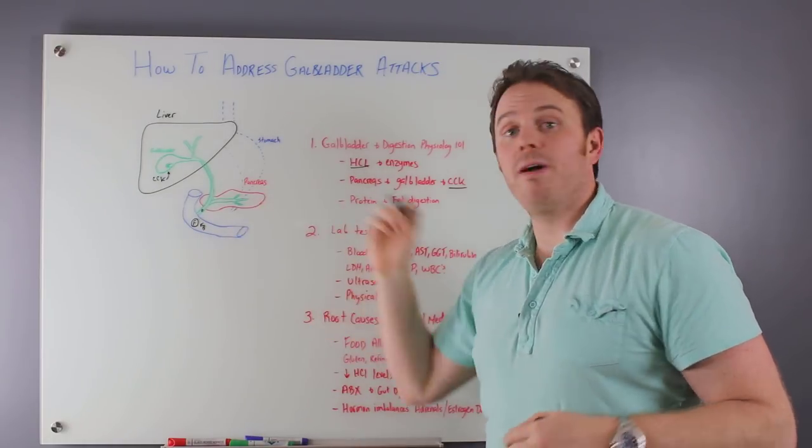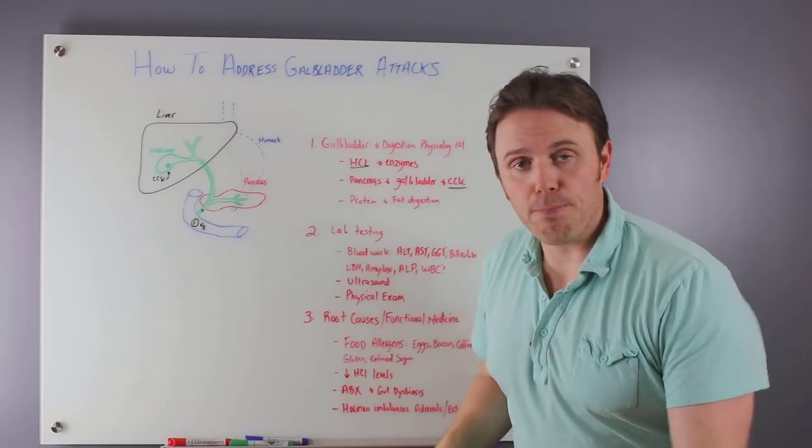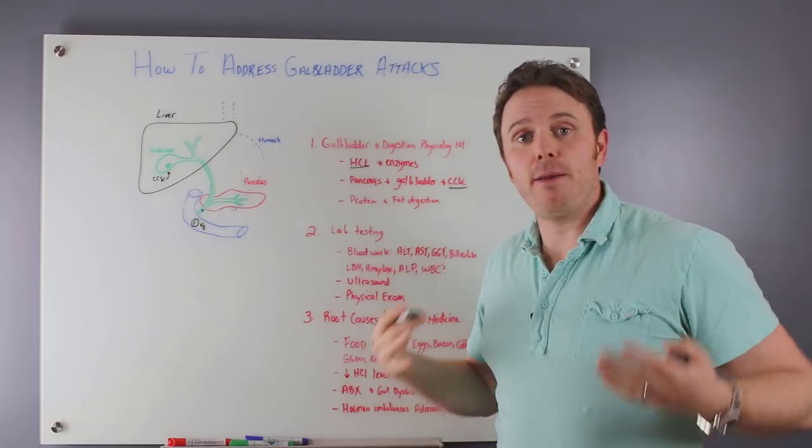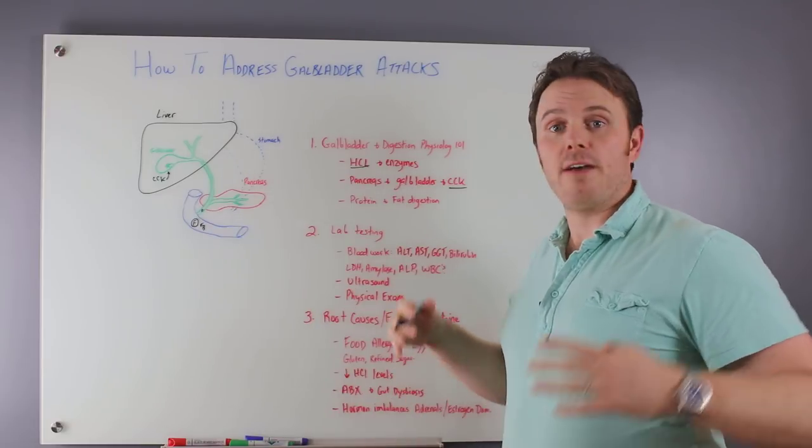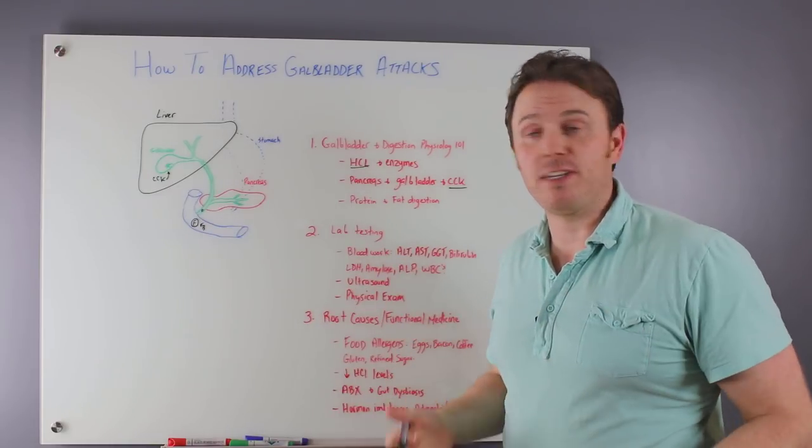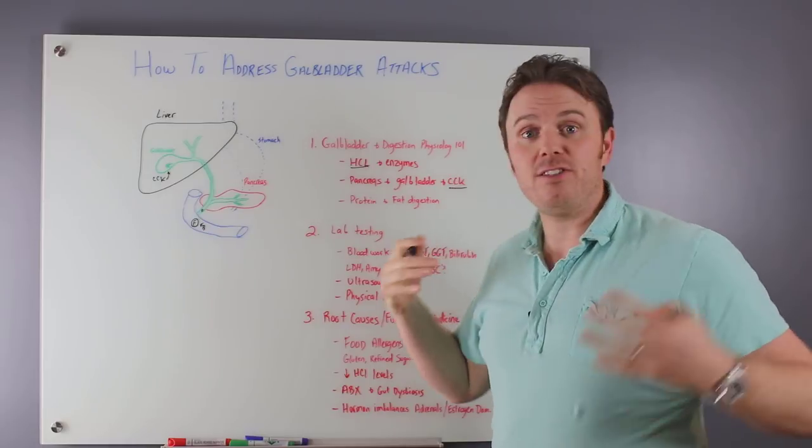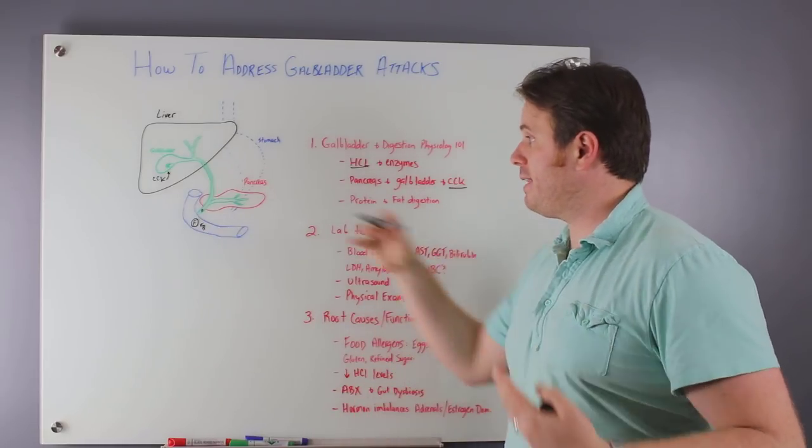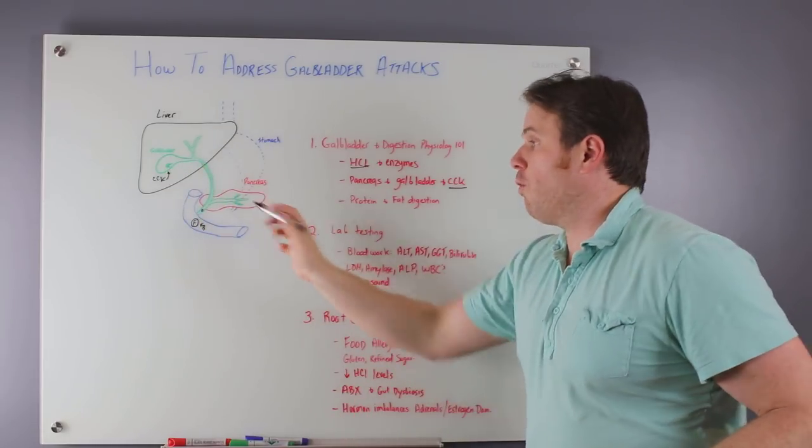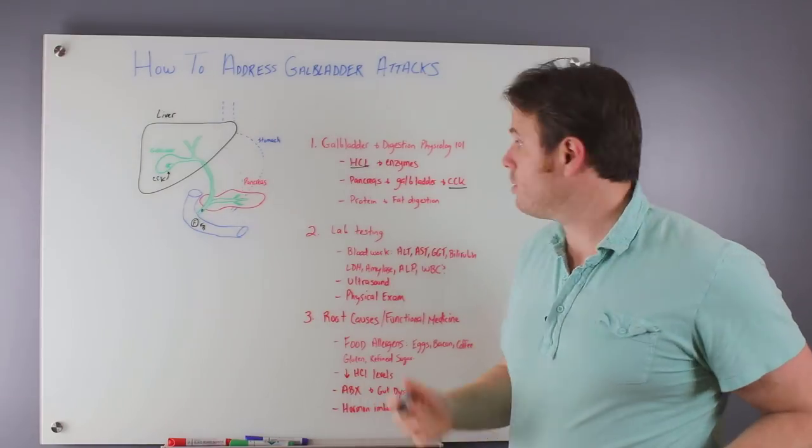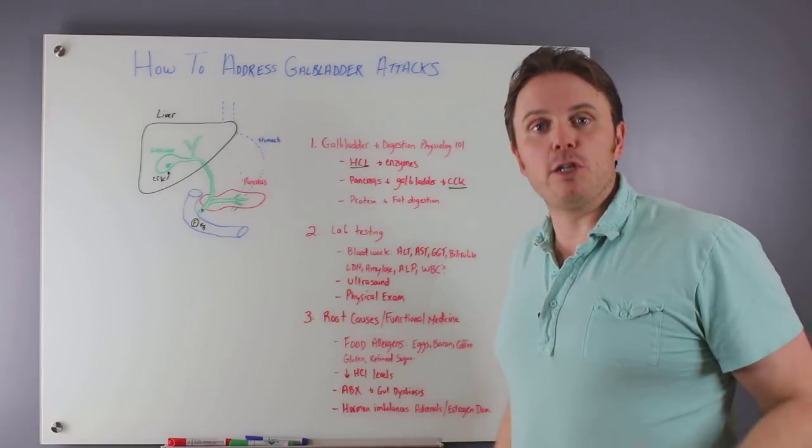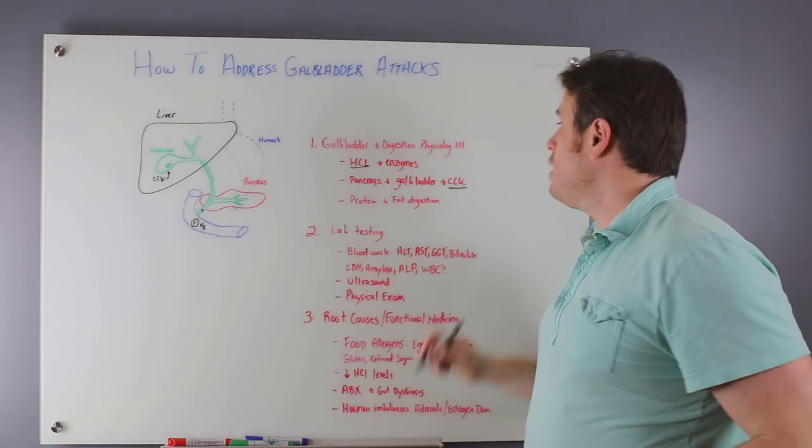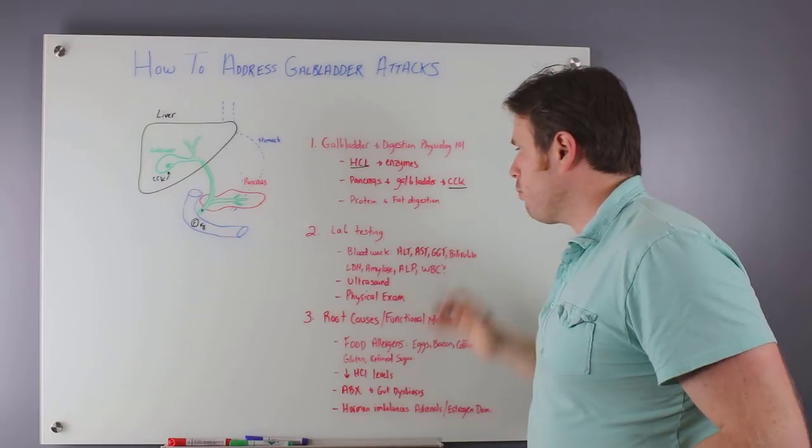You also have the pancreas here. It makes a whole bunch of pancreatic lipase and protease, which are fat and protein digesting enzymes, which help break down fat and protein. We have all these things happening in this digestive cascade. If we don't have enough acidity, it's possible that we won't get the adequate trigger of the bile or the release of enzymes from the pancreas. Really important, we need good HCl, good enzymes, and good bile production and stimulation to have our digestion work properly.